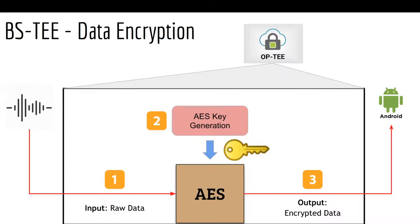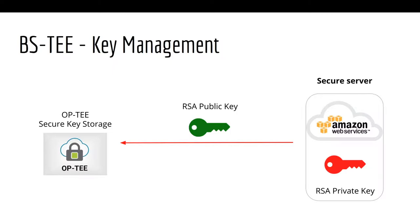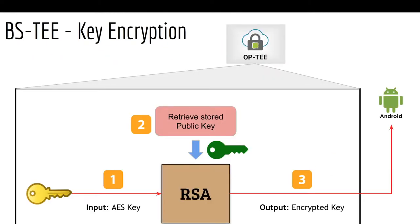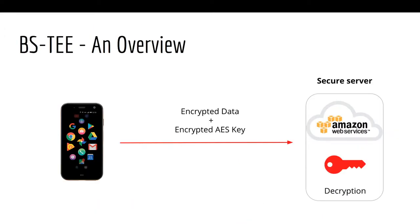Now you may ask: how do we send this AES key securely to the cloud for later decryption? This is where asymmetric encryption comes into play. During every boot-up, we will send a public key to our mobile phone, and this RSA public key will be securely stored in OPTEE's secure key storage. After the encryption, the AES key will be sent to the RSA trusted application, where the public key will be retrieved and used to encrypt the AES key before sending it up to Android. At this stage, both the encrypted data and the encrypted AES key can be securely stored inside Android's file system or uploaded to our secure server for later decryption and processing.